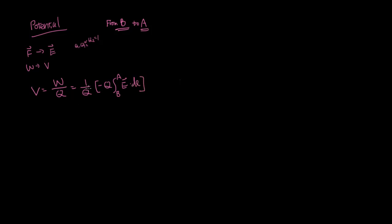But integral from B to A of E dot DL, and the Qs cancel out. So you come up with the expression that V equals minus, I'll just say start to end of E dot DL. So it's the same thing, we just don't have to worry about what Q is anymore.